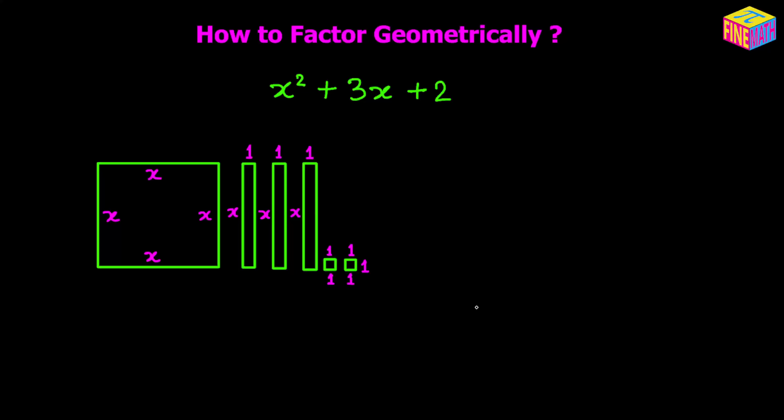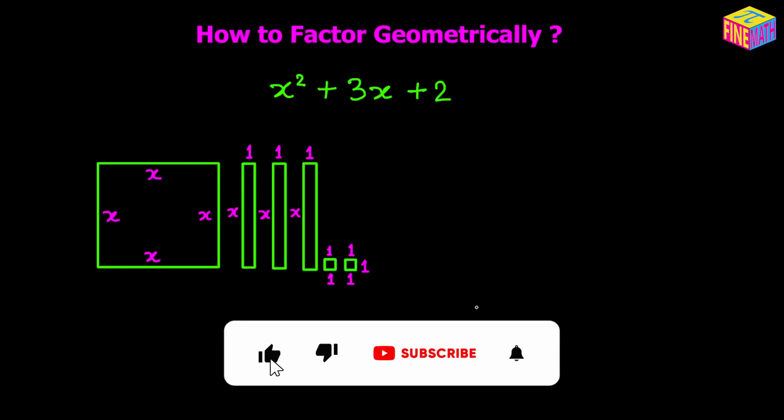The second term, which is 3 times x, let's assume that it represents 3 small rectangles. Each rectangle has a length of x units and a breadth of 1 unit. So the area of each of those little rectangles would be x times 1, which is x. And I have 3 of them, so that becomes 3x amount of area.